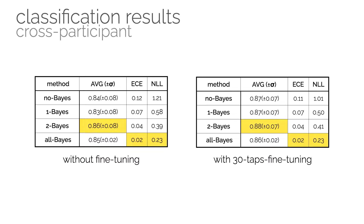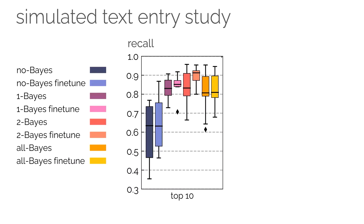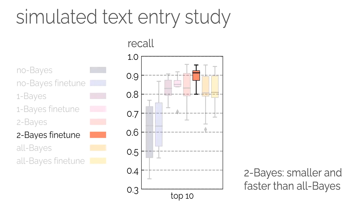We evaluated TapType in two ways. First, we evaluated our classifier offline. We found that TapType's Bayesian classifier only marginally improved detection accuracy, but as expected, it is significantly better calibrated than the deterministic baseline, which becomes apparent through the lower negative log likelihood and expected calibration error. We also ran a simulated text entry study to determine the model that allowed TapType to best retrieve the intended text. The two-Bayes model with fine-tuning achieved the best performance, while also requiring shorter inference time than the all-Bayes model. We therefore chose two-Bayes for TapType's operation during runtime.